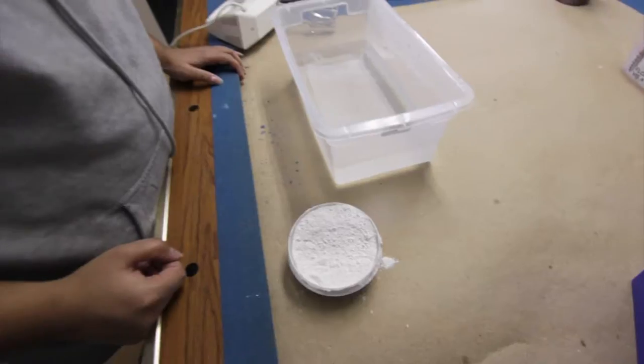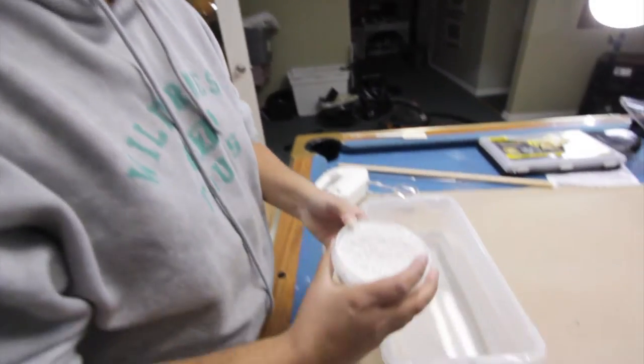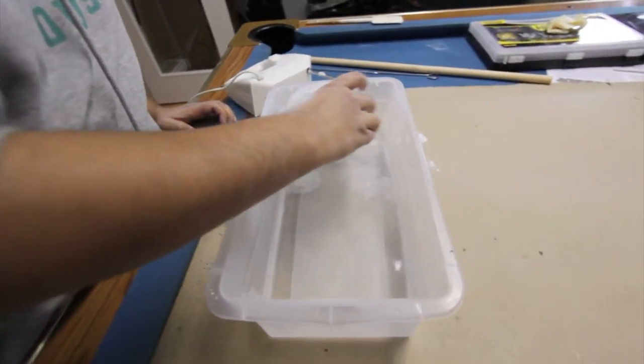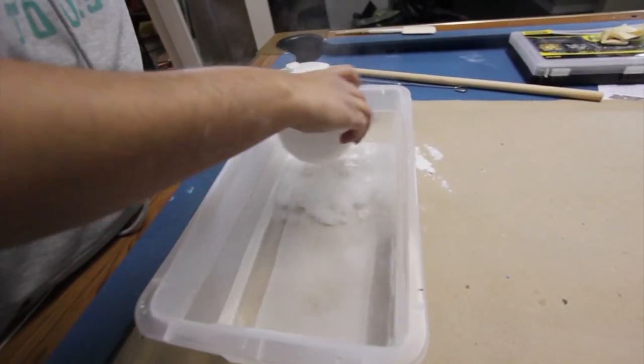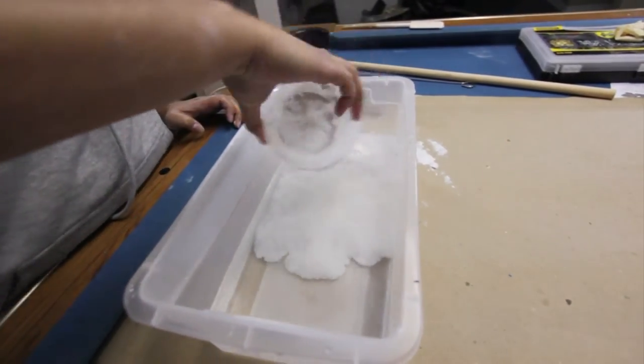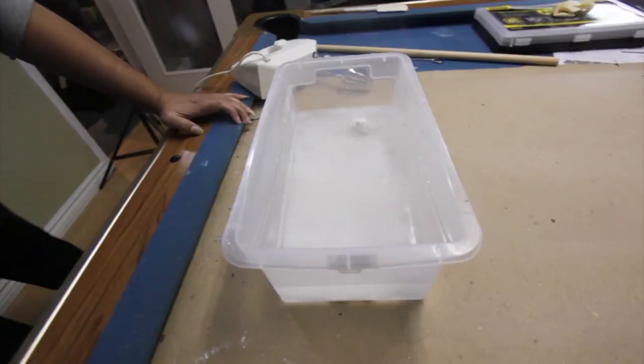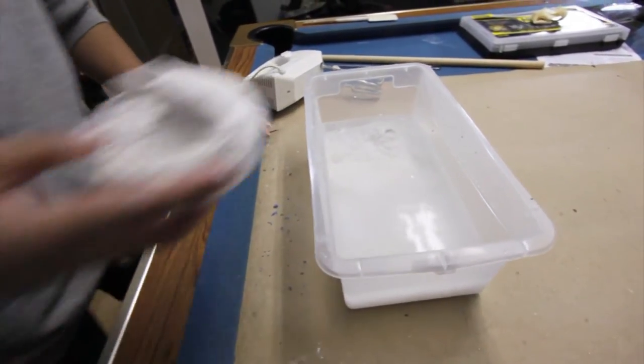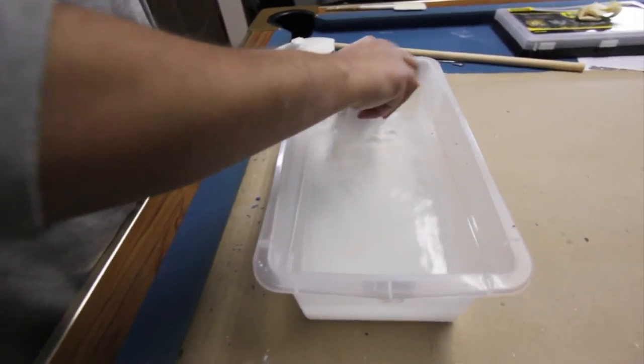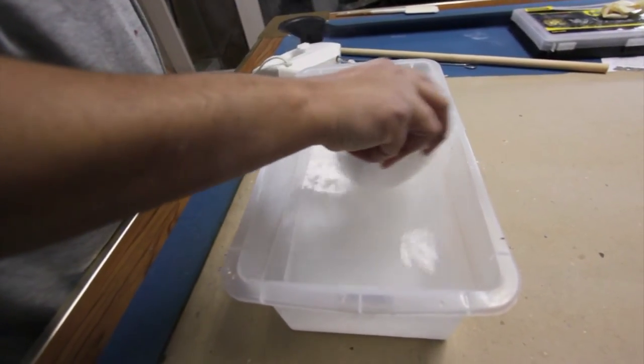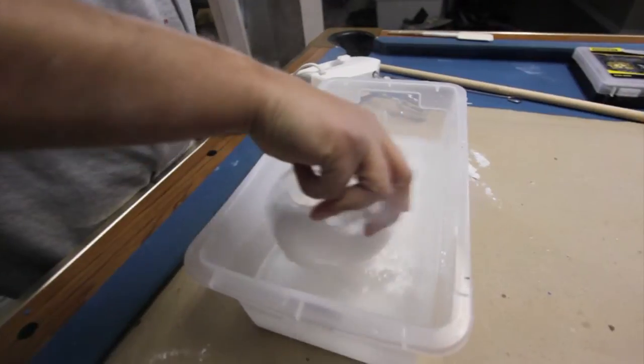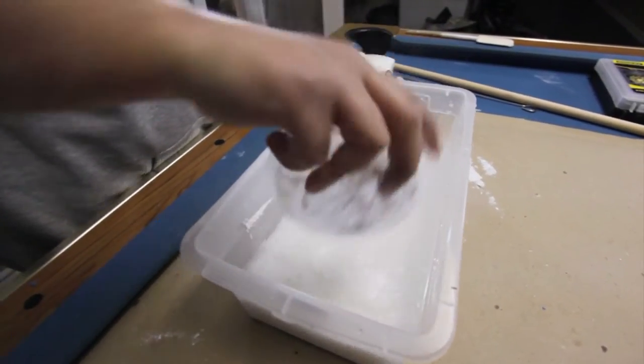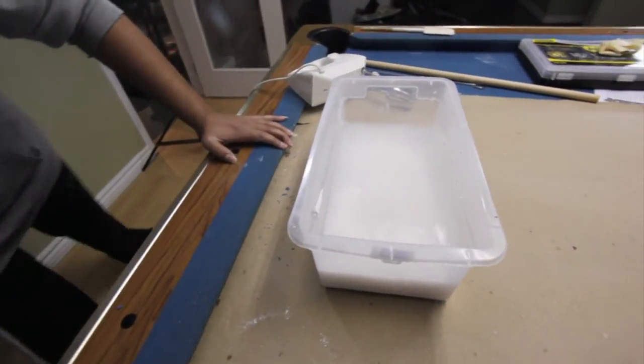Okay, so we're going to show you how to make ultra cal for your plaster cast. What we're pouring in here is called ultra cal 30, and it's a plaster. You put the ultra cal into the water, not the other way around.